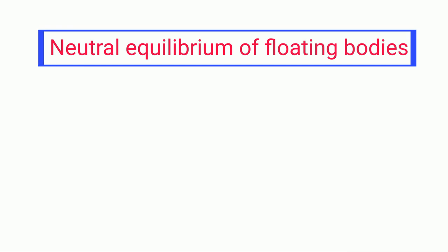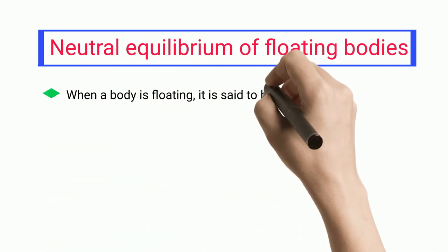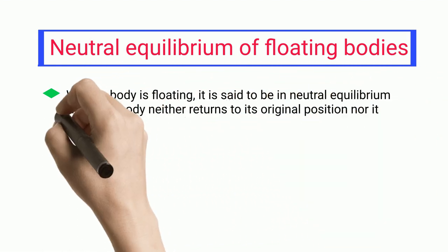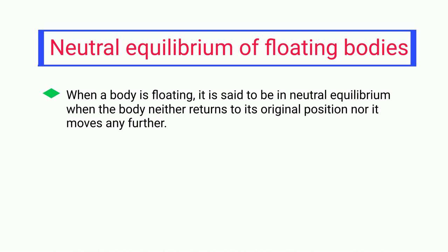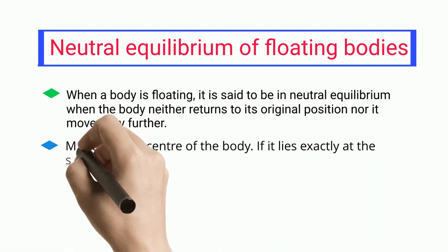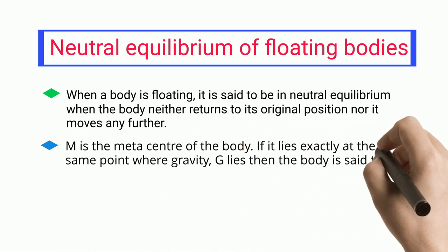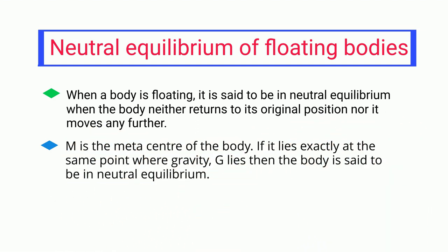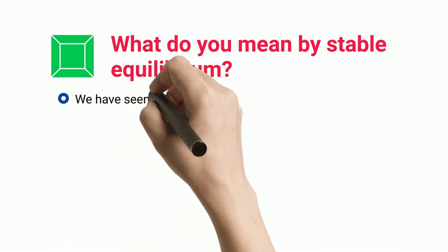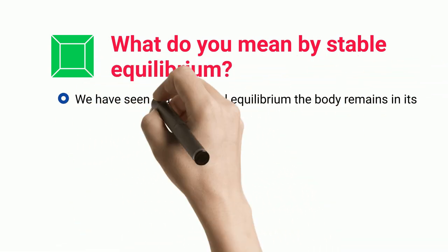Neutral equilibrium of floating bodies: when a body is floating, it is said to be in neutral equilibrium when the body neither returns to its original position nor moves any further. M is the metacenter of the body; if it lies exactly at the same point where gravity G lies, then the body is said to be in neutral equilibrium.